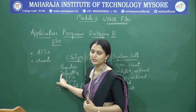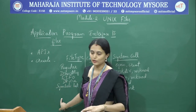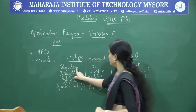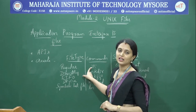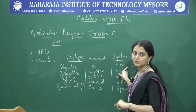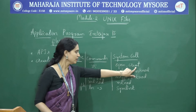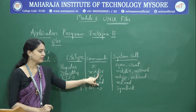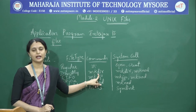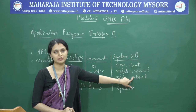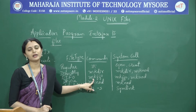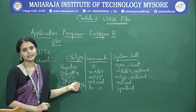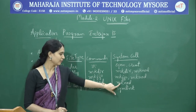For each file type, we have different commands and system calls to create them. For a regular file, we use the VI command, and correspondingly the open or creat system call — note the spelling is CREAT without an E. For a directory file, the mkdir command and the mkdir or mknod system call are used. For a FIFO file, the mkfifo command or mknod system call is used. For a device file, the mknod command and mknod system call are used.